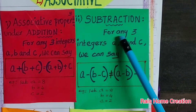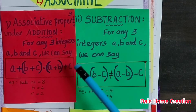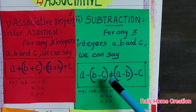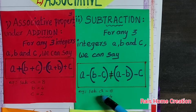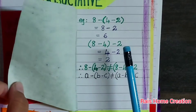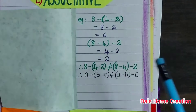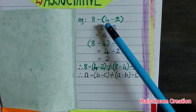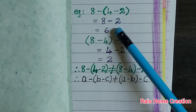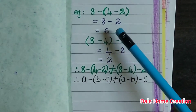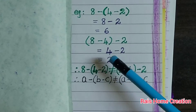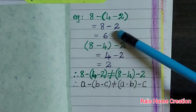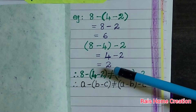Subtraction. For any three integers A, B and C, we can say (A minus B) minus C is not equal to A minus (B minus C). Example: let A equal to 8, B equal to 4, C equal to 2. 8 minus 4 minus 2: 4 minus 2 equal to 2, 8 minus 2 equal to 6. 8 minus 4 equal to 4, 4 minus 2 equal to 2. Both answers are not same. Hence, the given condition is not equal.